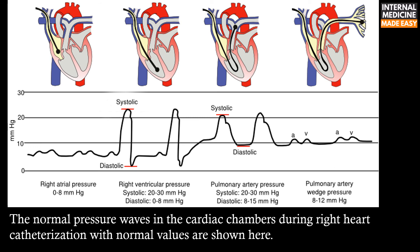In the pulmonary artery, the systolic pressure ranges from 20–30 mmHg and the diastolic pressure ranges from 8–15 mmHg. And finally, the pulmonary artery wedge pressure ranges from 8–12 mmHg.